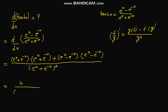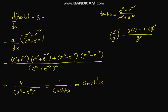After simplification we get 4 upon e to the power x plus e to the power negative x to the whole power 2, which is the value of 1 upon cosh squared x. So the derivative of hyperbolic tan x equals sech squared x. That is our final answer.